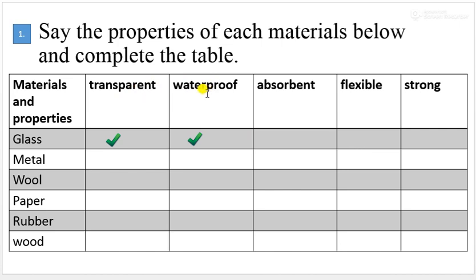Waterproof, absorbent, flexible, strong. You can tick. For example, glass. Glass is a material. This one we can see is transparent and it is waterproof. And you have to do this.